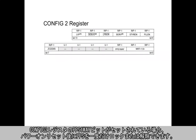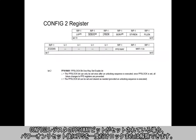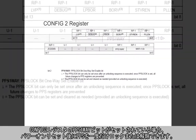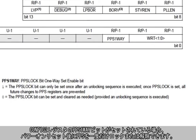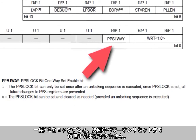The PPS1WAY bit in the CONFIG2 register can be set to limit the PPS lock bit from being set only once after a power-on reset. Once the PPS lock bit is set, it can't be changed.